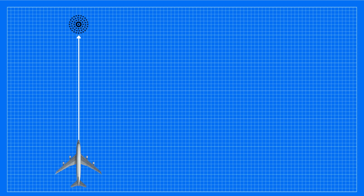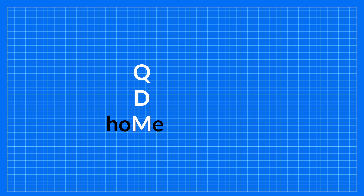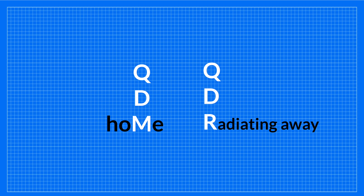When flying to or from an NDB, understanding bearings is essential. The bearing to an NDB is called the QDM — the magnetic bearing to the station — while the bearing from the NDB is the QDR — the magnetic bearing from the station. A useful mnemonic: when flying to an NDB, the M in QDM stands for 'home'; when flying away from it, you're on the QDR, where the R means you're radiating away from the NDB.